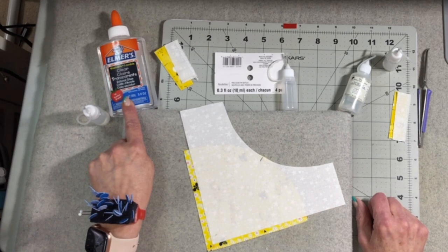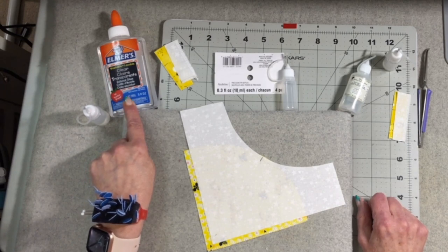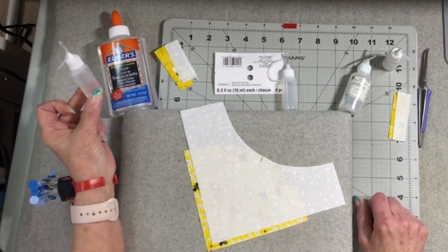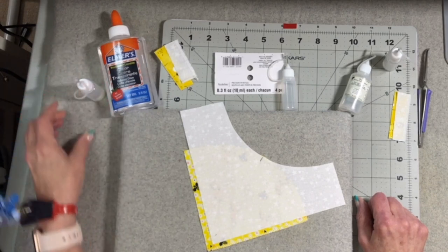In this corner we have Elmer's Washable Clear School Glue and again I've put it in a little bottle and we're going to do a test.